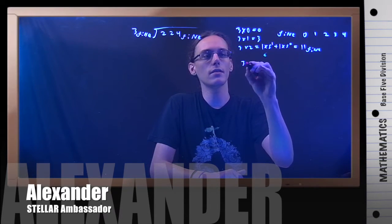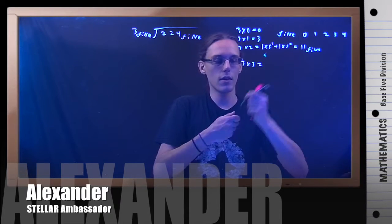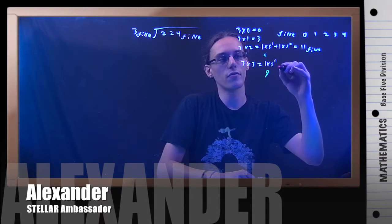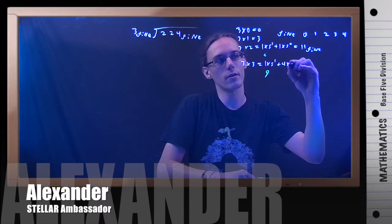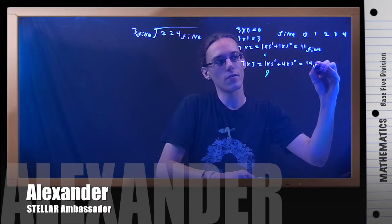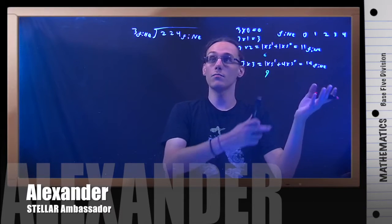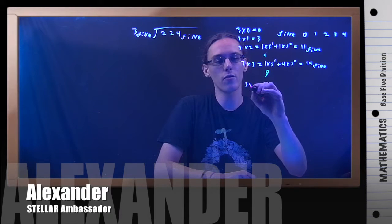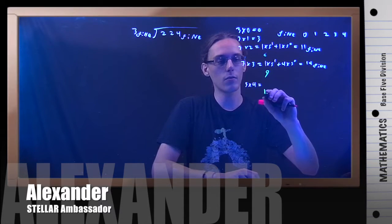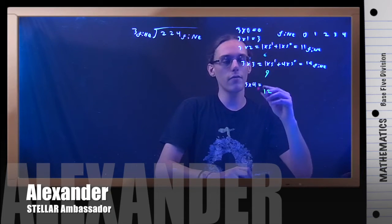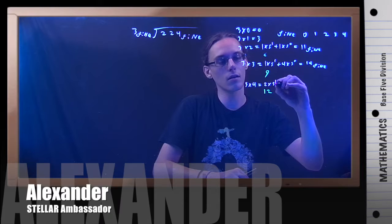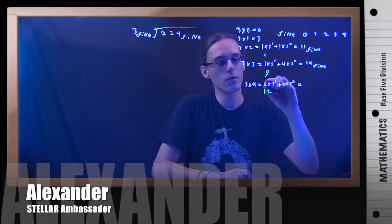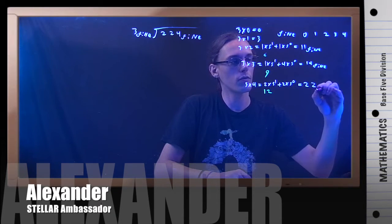Let's try 3×3, which is 9 in base 10. That would be 1 group of 5 plus 4 groups of 1, so that's 14 in base 5. Still smaller than 22. Let's try 3×4, which is 12 in base 10. That's 2 lots of 5 to give me 10, plus 2 lots of 1. So that gives me 22 in base 5.